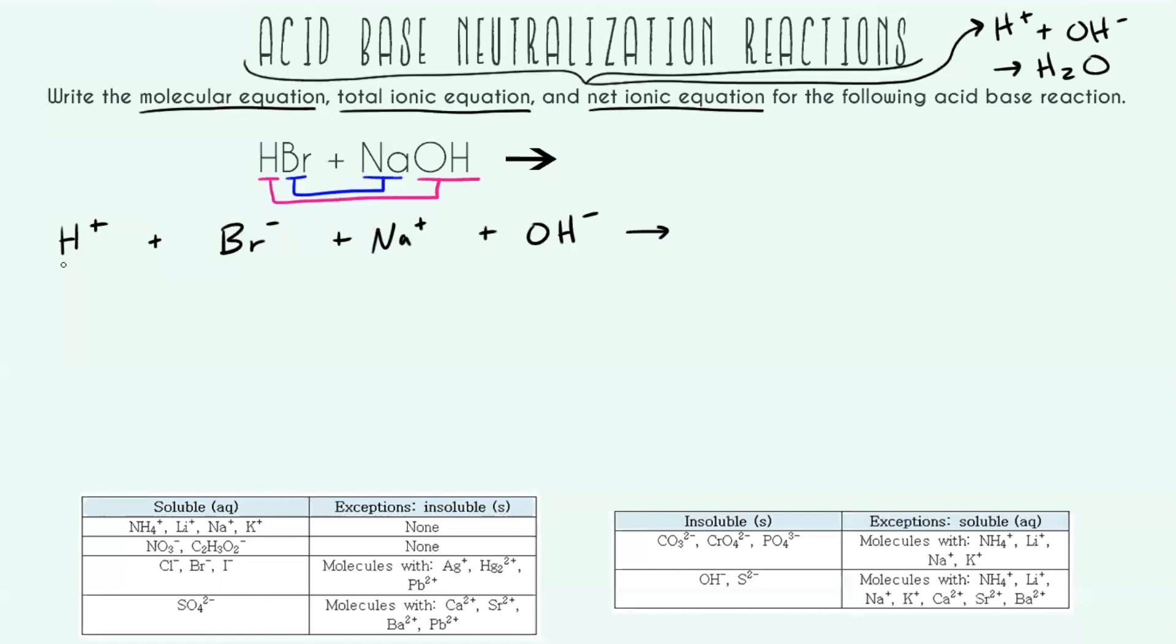Now filling out our top reaction based off of our opposite charges and our inside, inside, outside, outside rule. Let's go ahead and see what we're going to form. First, our two outsides, H+ and OH-, this is going to do the reaction I was talking about at the very beginning. This is how we form water, H2O. And now looking at what's left, we're going to make sodium bromide. This whole thing is my molecular equation.